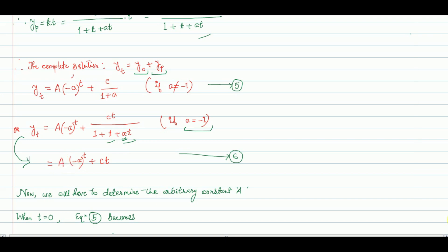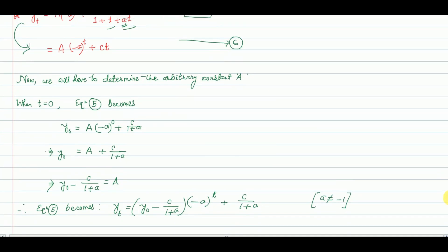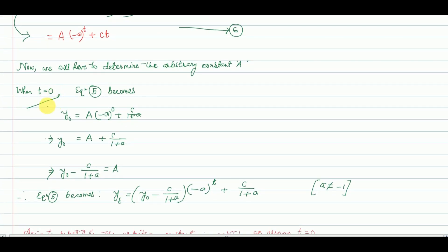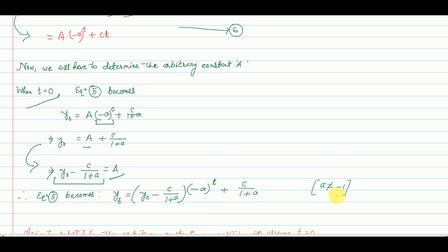Now our task is to find the value of the arbitrary constant A. When t = 0, equation 5 becomes y(0) = A·(−a)^0 + c/(1+a), which simplifies to y(0) = A + c/(1+a), since (−a)^0 = 1. Therefore A = y(0) − c/(1+a). Substituting this value of A into equation 5, we get the solution y(t) = [y(0) − c/(1+a)]·(−a)^t + c/(1+a), when a ≠ −1.